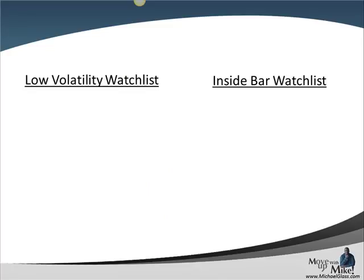As we come to our watchlist for today, we do have a low volatility watchlist. This is our one-hour time frame using Bollinger bands. We're going to be watching the dollar franc — it did get a little pop out, and then the bands are contracting again, so we're watching the high and low, the upper and lower bands. For our inside bar watchlist, we're going to be watching the dollar yen.